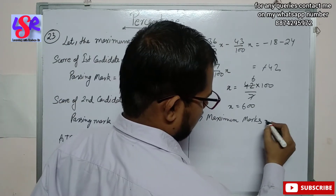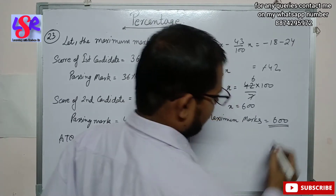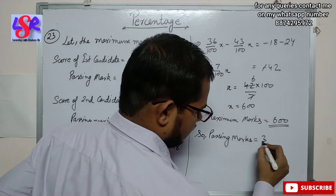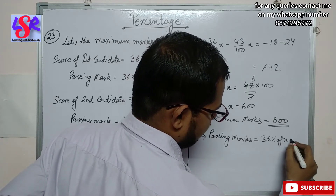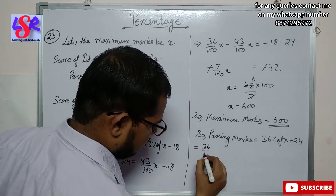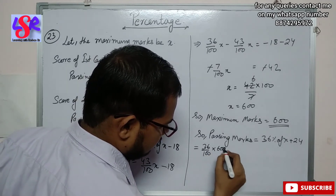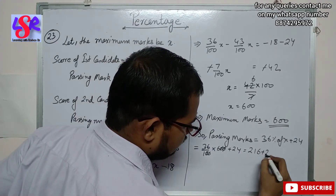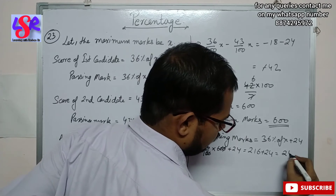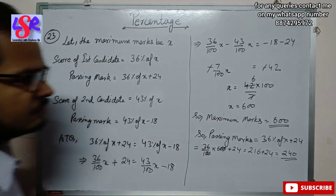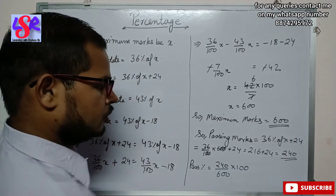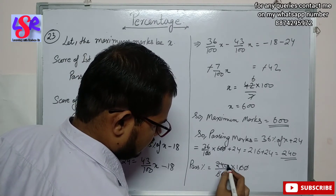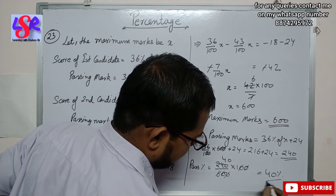Maximum marks equals 600. Passing marks can be calculated as 36 percent of x plus 24, that is 36 upon 100 into 600 plus 24. The zeros cancel out, giving 216 plus 24, that is equals to 240. So 240 is the passing marks in this examination, and the passing percentage is 240 upon 600 into 100, which equals 40 percent.